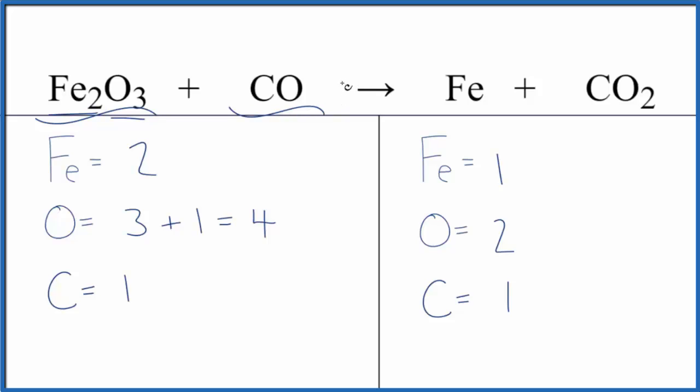So first off, we count the atoms up on each side of the equation, and I've already done that. The thing to be careful about, three oxygens here, but don't forget the one in the carbon monoxide. That gives us a total of four.